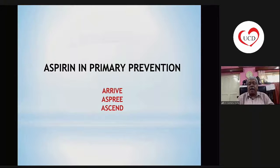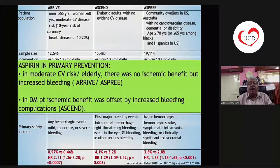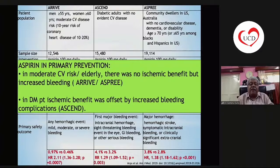Coming to aspirin in primary prevention, three trials — ARRIVE, ASPREE, and ASCEND — all shared one common finding: increased bleeding with aspirin versus placebo. In moderate CV risk or elderly patients, as in ARRIVE and ASPREE, there was no ischemic benefit with aspirin but increased bleeding. In the ASCEND trial in diabetic patients, there were some ischemic benefits, but these were offset by increased bleeding complications.